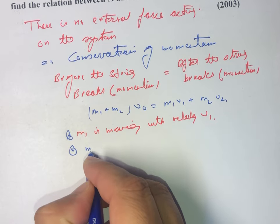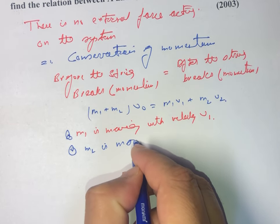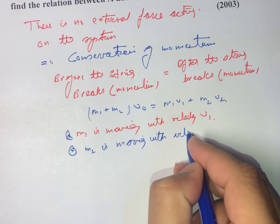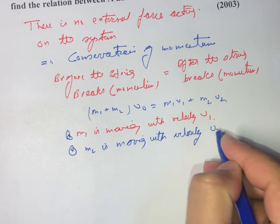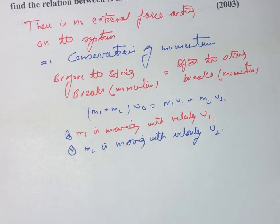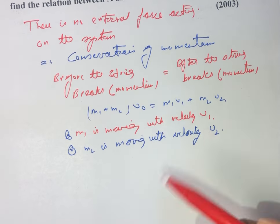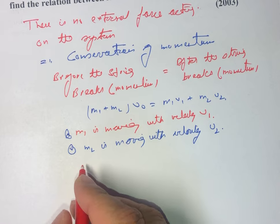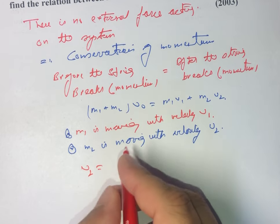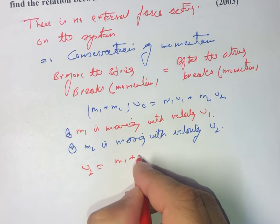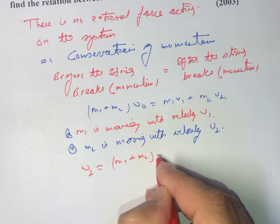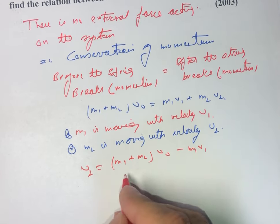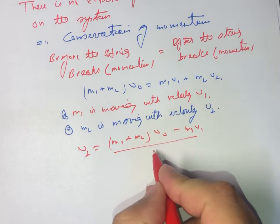m2 is moving with velocity v2. So we can say v2 = [(m1 + m2)·v0 - m1·v1] / m2. Let's call this equation number 1.